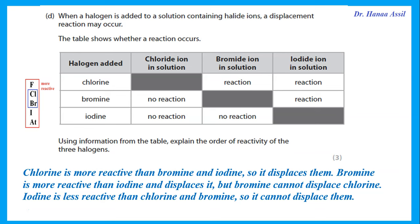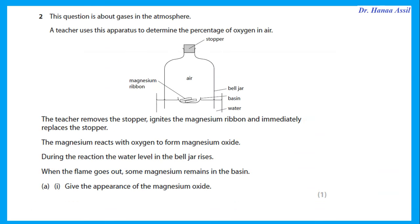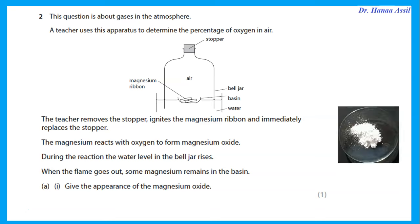Question 2 is about gases in the atmosphere. A teacher uses apparatus to determine the percentage of oxygen in air. The teacher ignites magnesium ribbon inside a bell jar; the magnesium reacts with oxygen to form magnesium oxide, and the water level rises. The first question asks for the appearance of magnesium oxide — magnesium oxide is a white ash or white solid.